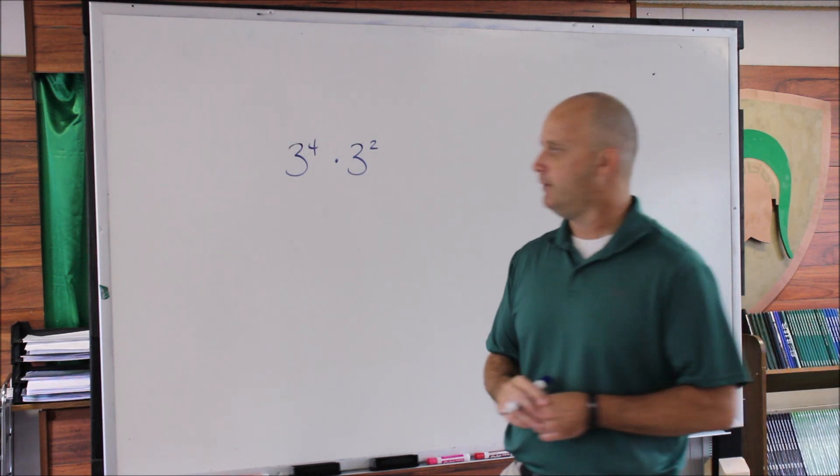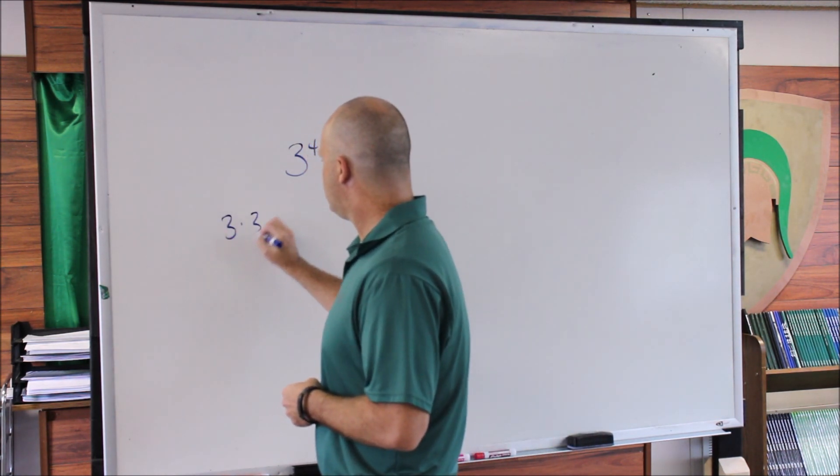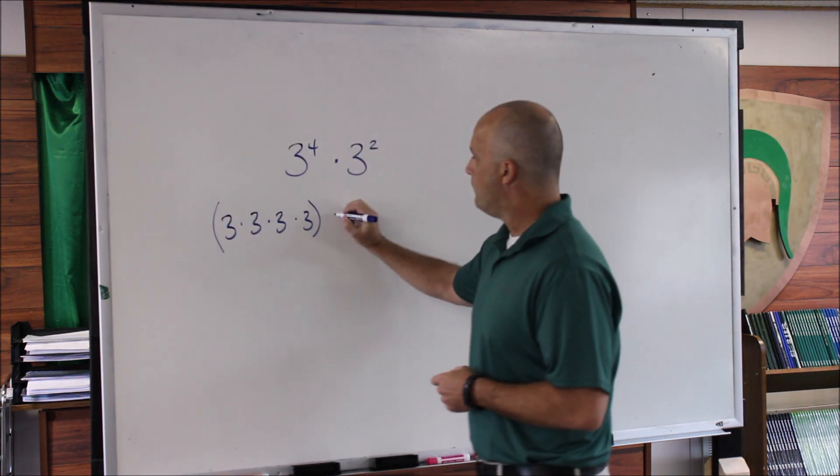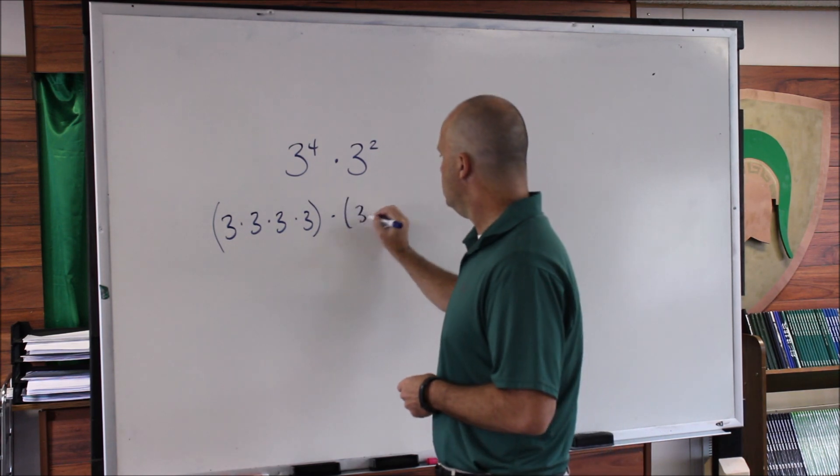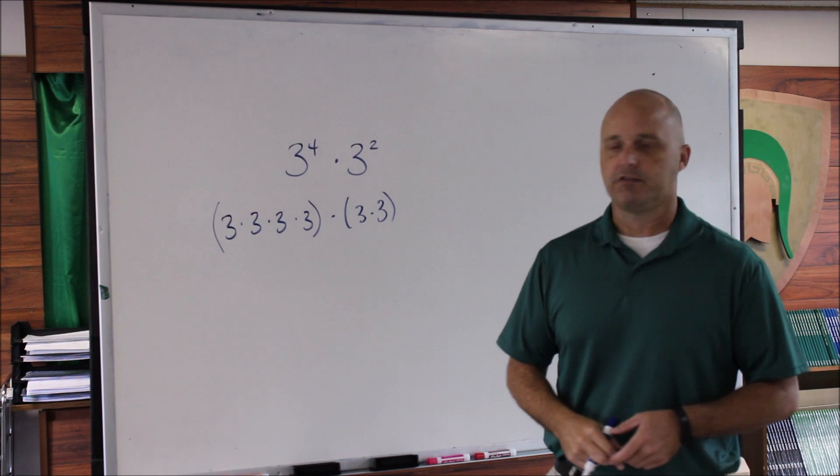Here's the reason why. If we've got 3^4, that tells us we've got 3 × 3 × 3 × 3. Then we're multiplying that by 3^2, which is just 3 × 3. So how many times is 3 being multiplied against itself?